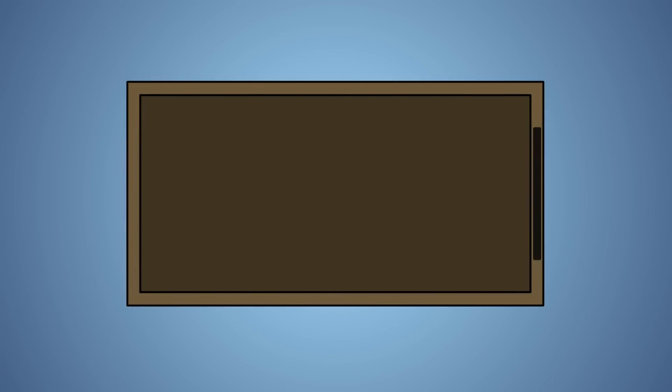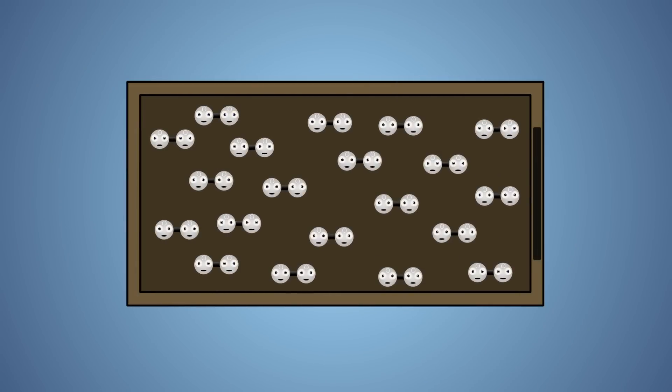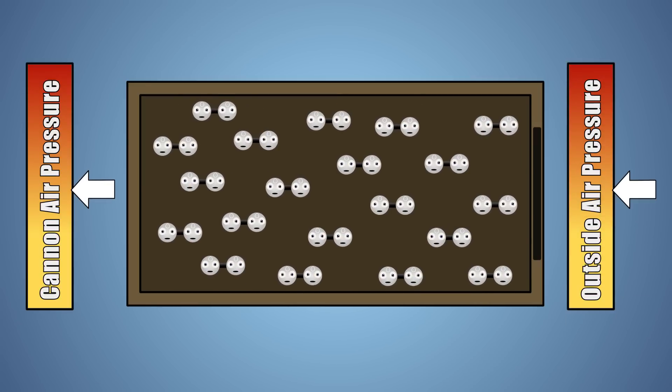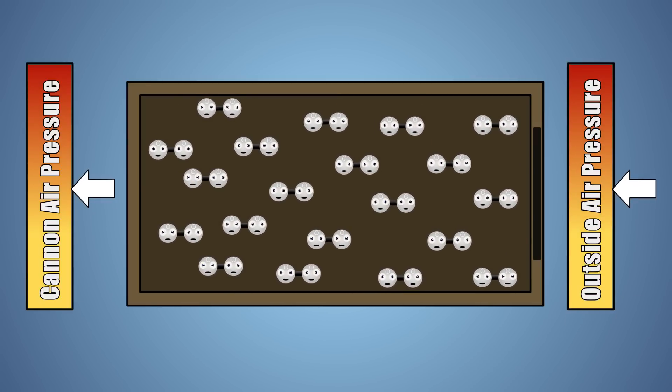Let's look at this experiment a little closer. Our cannon is full of air molecules, and they press against the sides of our box, generating pressure. At the beginning of our experiment, the pressure inside and outside of our box is about equal.